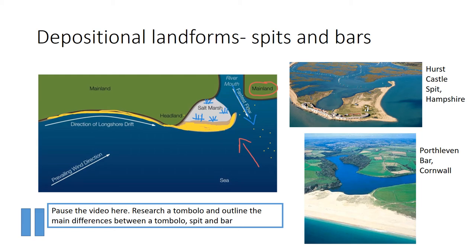Other features will also form. Spits are long narrow ridges of sand and shingle stretching out from the coast. They form where longshore drift moves sediment along the coast in the same direction as the prevailing wind. When the coastline changes direction, such as at the mouth of a river, the sediment is deposited as a long ridge which stretches away from the coast to form a spit. Many spits develop a hooked or recurved end, caused by the wind and waves changing direction. Sand dunes are usually found on this hook. Behind the spit is a sheltered area of saltwater marshes and mud flats, covered by the sea at high tide.